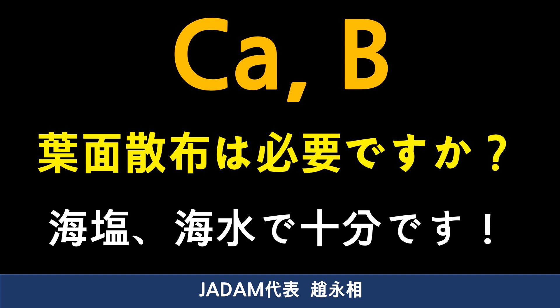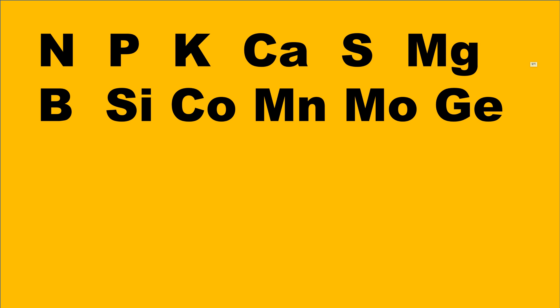A lot of people face confusion while studying agriculture because of nitrogen, phosphoric acid, potassium, calcium, sulfur, magnesium, boron, cobalt, manganese, molybdenum, germanium, and selenium, which are needed in farming. People often talk about balancing these elements to be a successful farmer. Today, I'm going to talk about calcium and boron in this video.